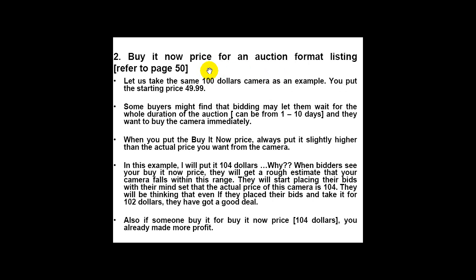As mentioned before, you can add a Buy It Now price for an auction format listing. This will allow buyers to buy your item immediately and they don't have to wait for the whole duration of the auction, which can be from one to ten days. Taking the $100 camera as an example again — you put the starting price as $49.99, and you want $100 from this camera, so go ahead and put a Buy It Now price of $104.